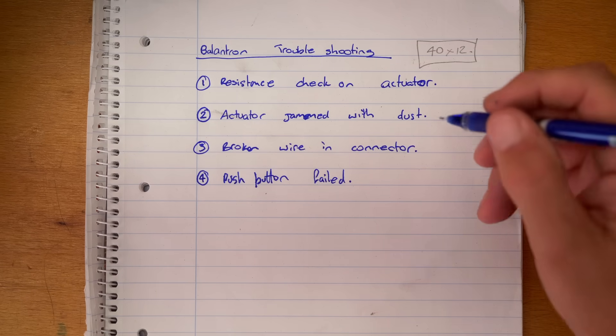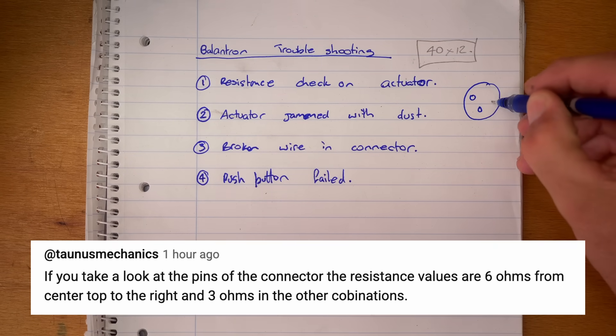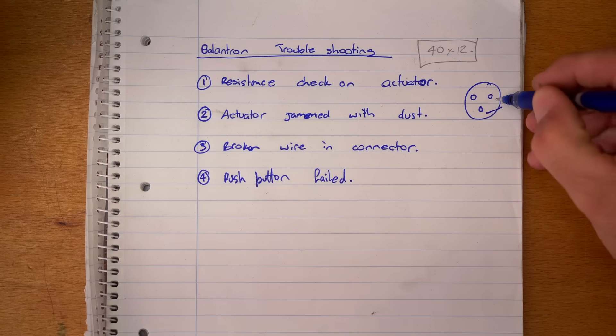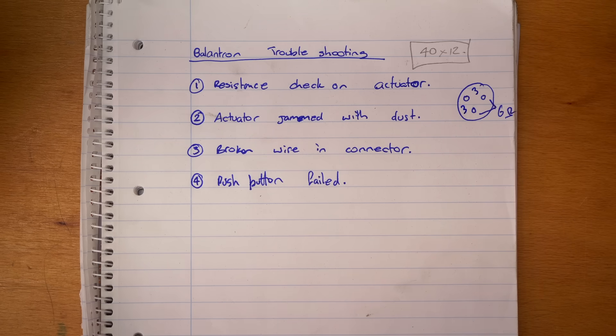Now one really excellent input was from Tornis Mechanics who pointed out that on that connector I should have six ohms between these two and then three and three in the other combinations.